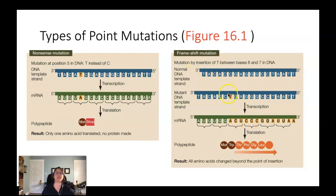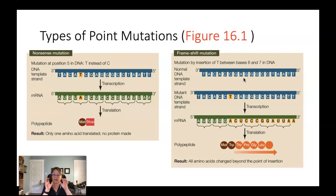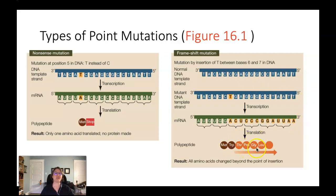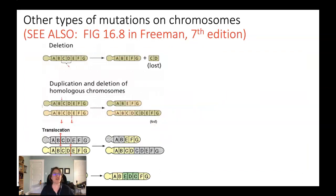Finally, frameshift mutations occur when you get an insertion of a codon where there wasn't one before. Because DNA transcription and translation occur in groups of three, inserting a single codon shifts the whole reading frame. It's as if you can no longer read the words — you end up with absolute nonsense, and every single amino acid is changed after that insertion. Frameshift mutations cause deleterious effects in most cells where they occur.